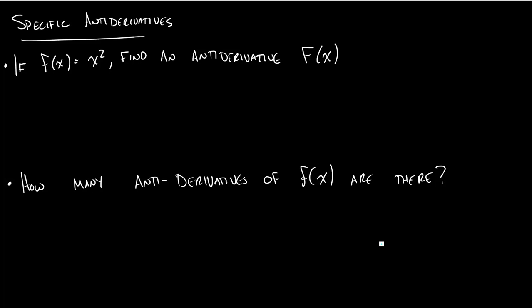So one last big idea from this section, and that's the idea of specific antiderivatives. To do this, we're going to revisit a concept from the first video. If little f of x equals x squared, find an antiderivative, big F of x. We've just been using our formula and saying whatever we wanted.